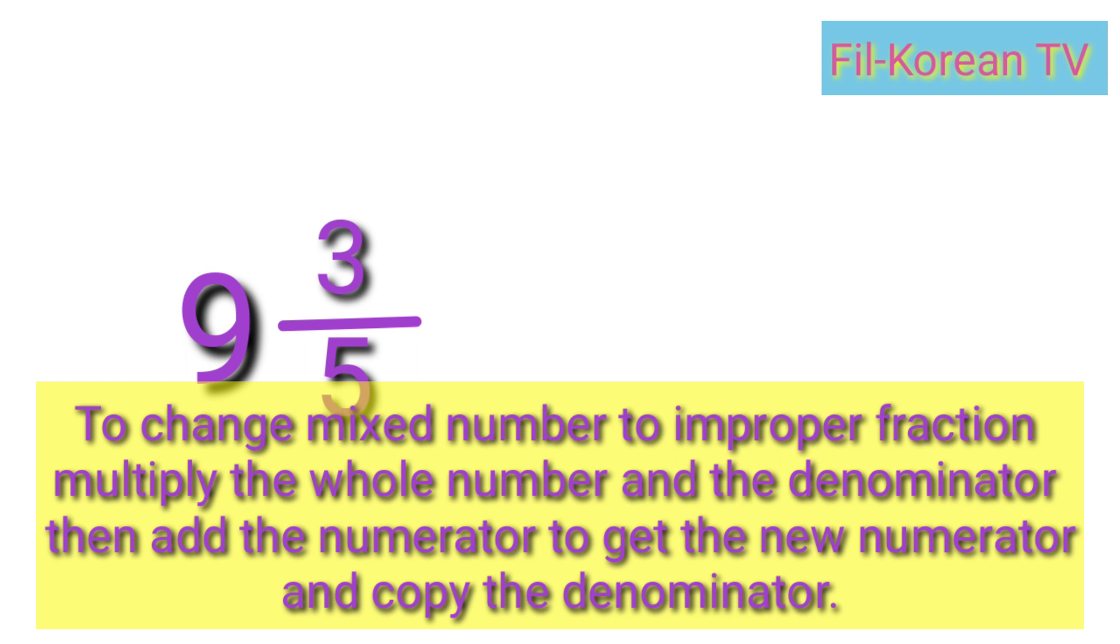To change mixed number to improper fraction, multiply the whole number and the denominator, then add the numerator to get the new numerator and copy the denominator.